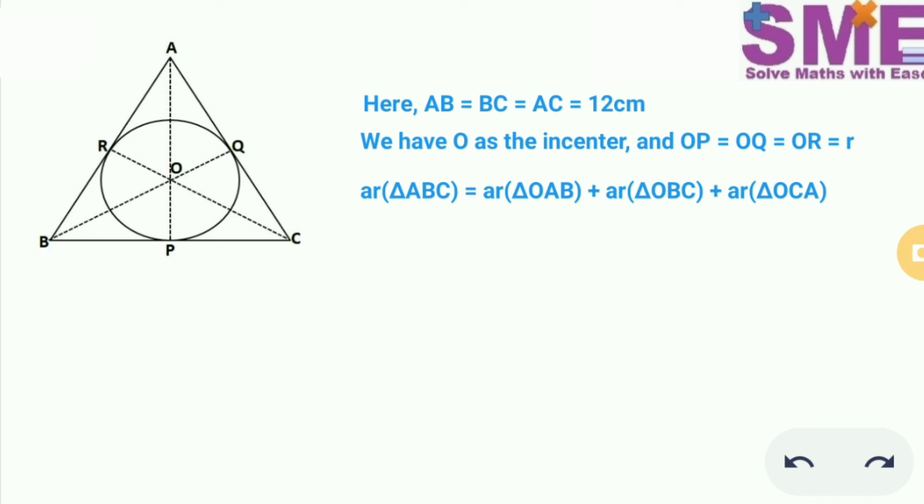From the given figure we have area of triangle ABC will be equal to the sum of the three triangle areas which is OAB, OBC and OCA.